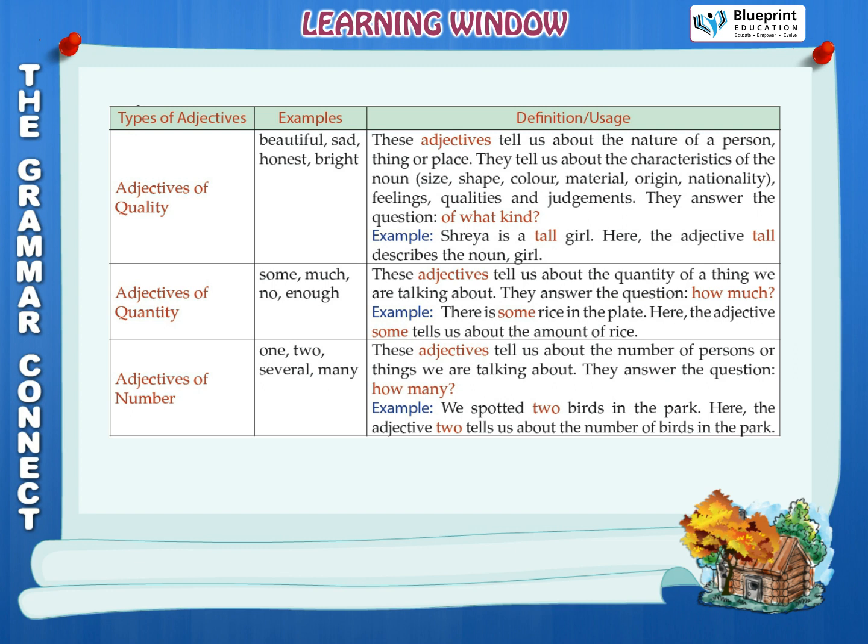Adjectives of quality — examples: beautiful, sad, honest, bright. These adjectives tell us about the nature of a person, thing, or place. They tell us about the characteristics of the noun, such as size, shape, color, material, origin, nationality, feelings, qualities, and judgments. They answer the question: of what kind? Example: Shreya is a tall girl — here the adjective 'tall' describes the noun 'girl'.